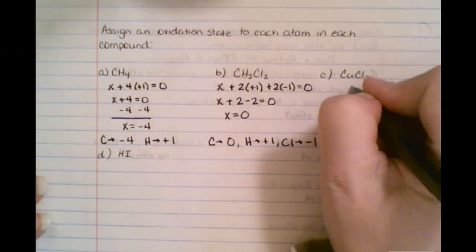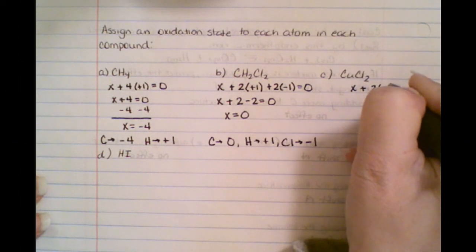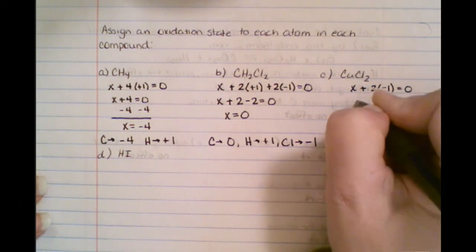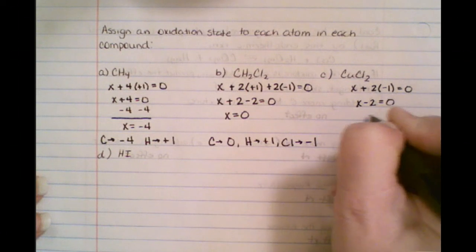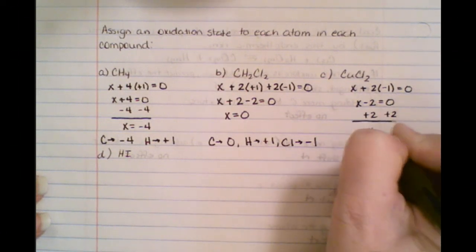So when we come over here, we've got copper. We don't know. It's a transition element. We know that chlorine is a minus one. So we get x minus two equals zero, and we solve for x. So x equals two.